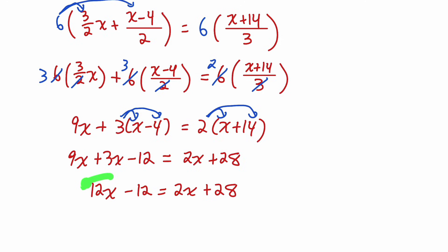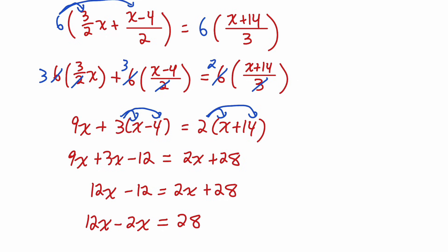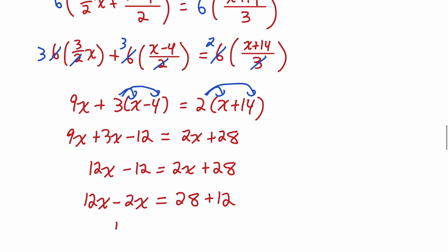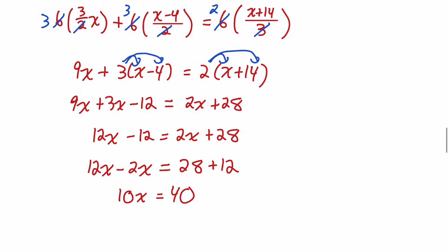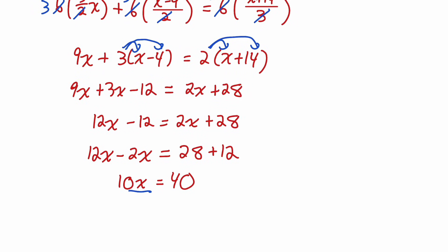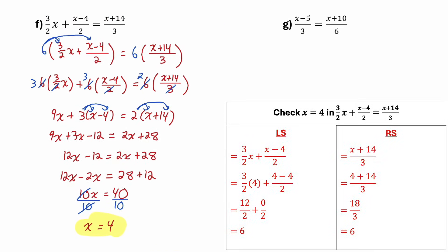Now I'll rearrange by getting my variable terms on the left. I'll leave the 12x and bring this 2x to the other side as negative 2x. On the right, I'll leave my constant 28 and bring over the negative 12 by adding 12, giving me 10x equals 40. The opposite of multiplying by 10 is dividing by 10. Dividing both sides by 10, the 10s cancel, giving me x equals 40 over 10, which means x equals 4 is the final answer, which can be checked in the original equation.